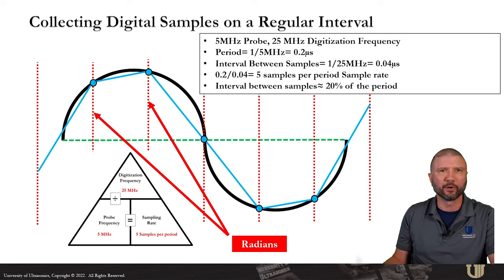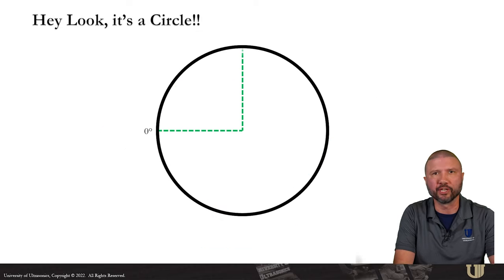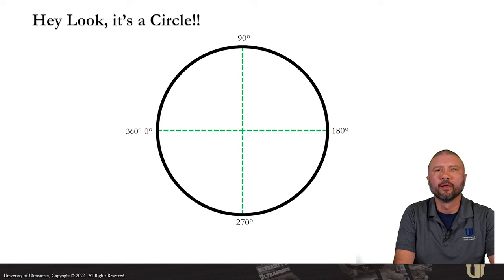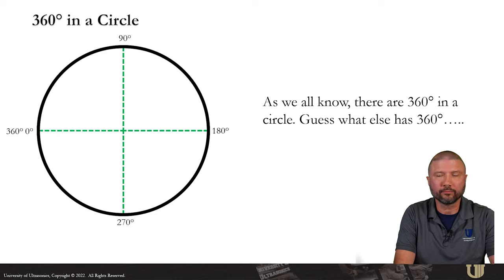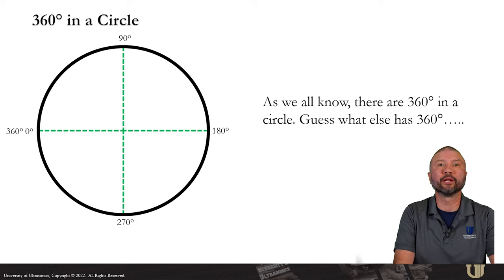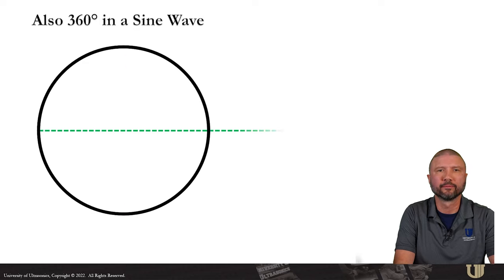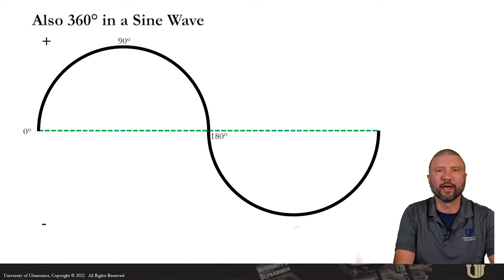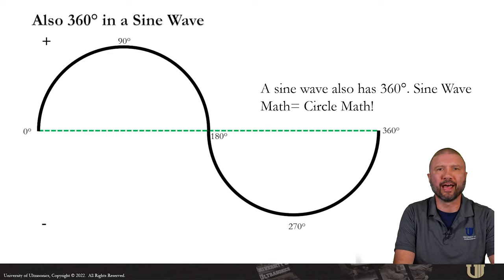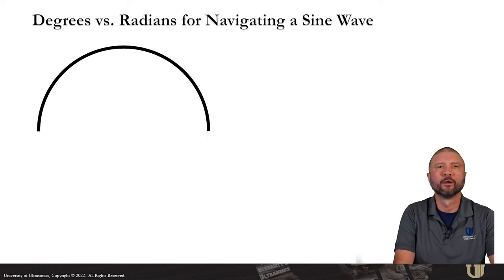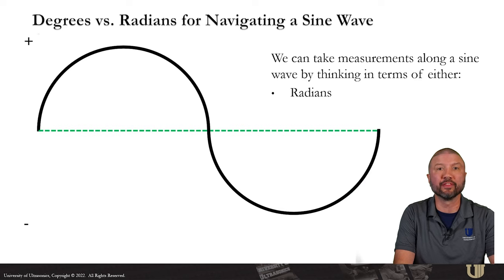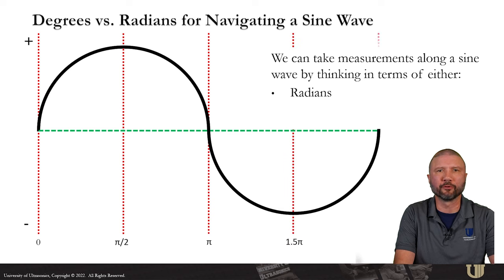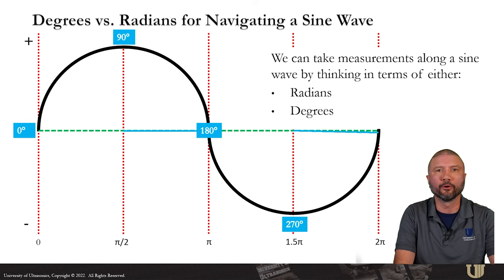These vertical lines can be thought of as radians, but what if I told you that radians were not the only way to measure a cycle? So let's start with a really simple shape that we're all familiar with, a circle. How many degrees are in a circle? Well, as we all know, or should know, there are 360 degrees in a circle. Guess what else has 360 degrees? A sine wave also has 360 degrees. Sine wave math equals circle math, at least for our purposes here today. We can take measurements along the sine wave by thinking in terms of either radians, which are best suited for calculating timing fidelity as seen in the previous video, or degrees, which are better suited for calculating amplitude fidelity. And that's what we are doing today.